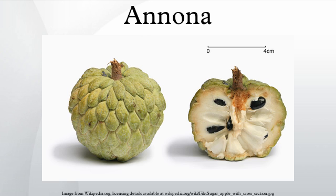Annona species are generally disease-free but are susceptible to some fungi and wilt. Ants are a problem, since they promote mealy bugs on the fruit. Relevant pests and pathogens include various insects, fungi, nematodes, and algae such as Cephaleuros virescens, Cephalosporium spp., and Paecilomyces spp.